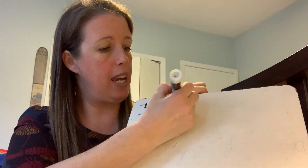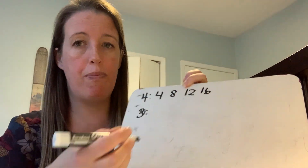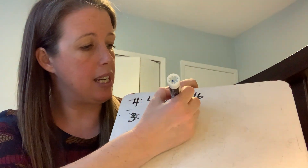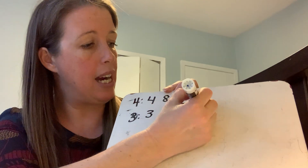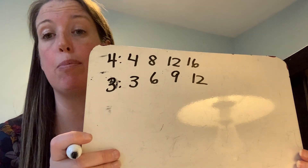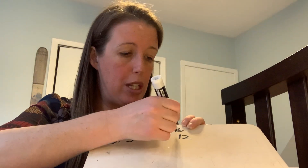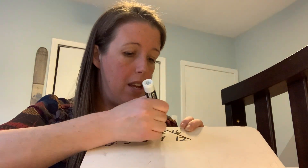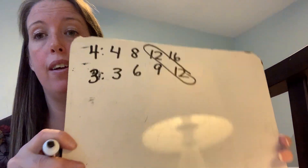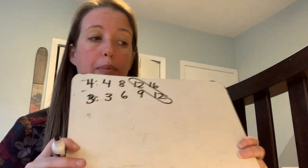Multiples of four: 4, 8, 12, 16. Multiples of three: 3, 6, 9, 12. I'm going to do a quick check to see if I have any multiples that are in common — and I do. I have my twelves, which means twelve is going to be my new common denominator.